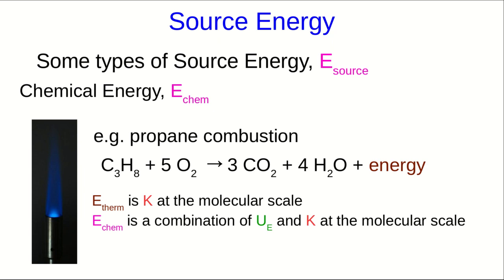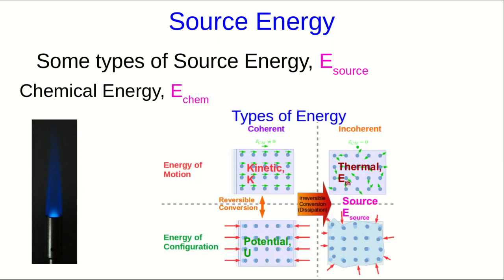And this explains why when I drew this original categorization of types of energy, I put the source energy where I did in the diagram in between energy of motion and energy of configuration, because it's a combination of microscopic incoherent kinetic energies and microscopic incoherent potential energies.